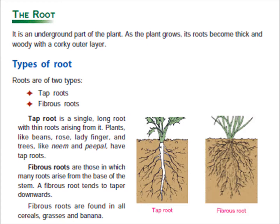Your next topic is fibrous roots. What are fibrous roots? Fibrous roots are those in which many roots arise from the base of the stem and taper off downwards. Fibrous roots are found in all cereals, grasses and banana. Cereals include rice and wheat. Plants like grass, wheat, rice and onion don't have one main root — they have thin and bushy roots growing from the end of the stem. These thin and bushy roots together are called fibrous roots.